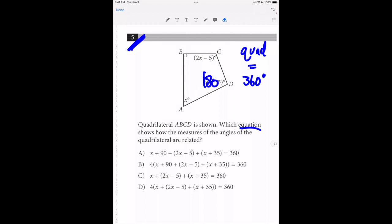So in this particular case, we are good with just acknowledging that this angle 90 degrees plus this angle plus this angle plus this angle is equal to 360. And that's what choice A shows us: 90 plus x plus 2x minus 5 plus x plus 35 is equal to 360.